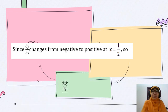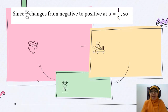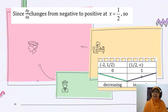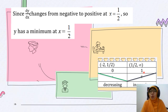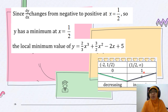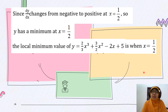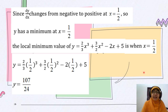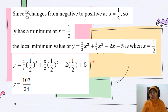For x = 1/2, the sign of dy/dx changes from negative to positive. From the rough sketch, we can see that y has a minimum at x = 1/2. To find the minimum value, substitute x = 1/2 into y, giving 107/24. So the function has a minimum value of 107/24 at x = 1/2.